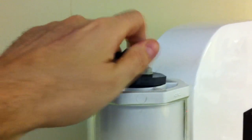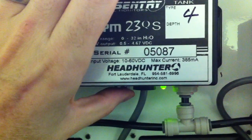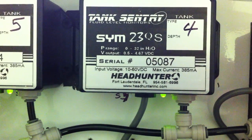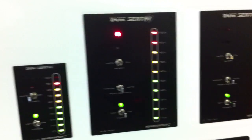After empty has been set, you reconnect the tubing and re-purge the SIM. And that is how you calibrate a tank sentry. Thank you.